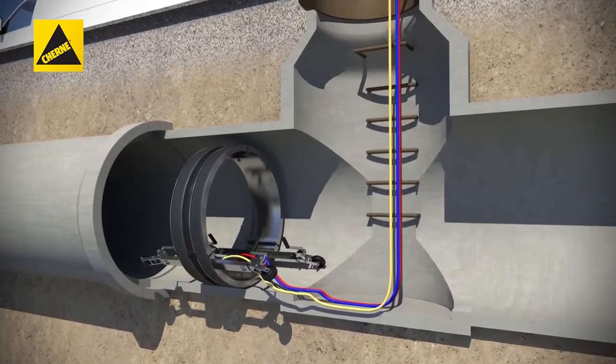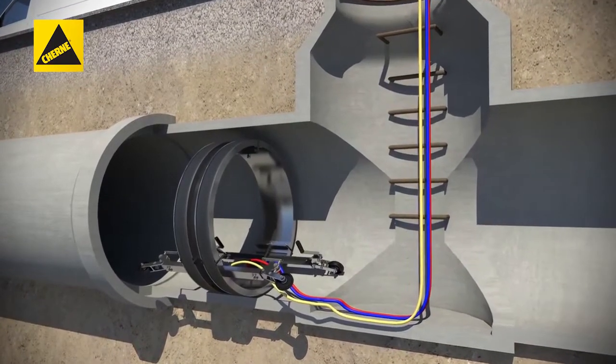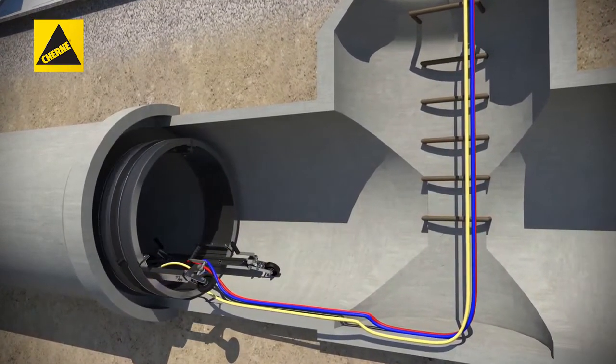Step 1. Once completely assembled and inside the pipe, roll the joint tester to the first joint to be tested.